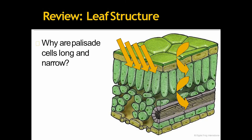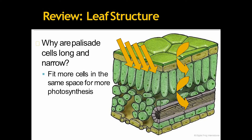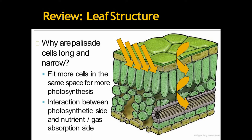Now, why are palisade cells long and narrow? To fit more cells in the same space for more photosynthesis. And interaction between photosynthetic side and nutrient or gas absorption side. So, they have distinctly two phases to interact in between them. They have this dome-shaped structure.